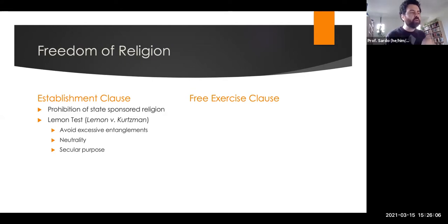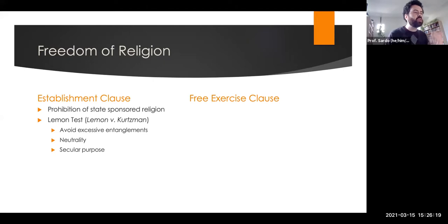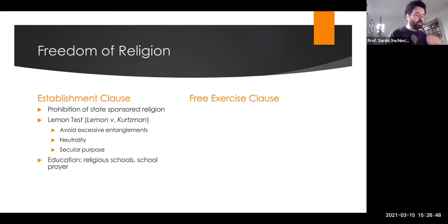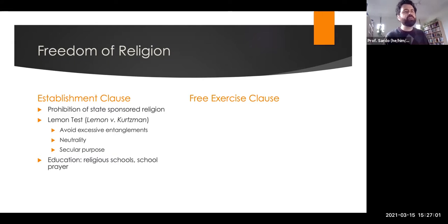The Lemon Test is a three-part test. First, a law must avoid excessive or unnecessary entanglements — the boundary between government and religion should be clear. Second, it should be neutral: it cannot inhibit or advance any particular religious practice. Third, the law must have some secular purpose — its primary justification cannot be religious, it has to be for the common good or another non-religious reason. This often comes up in questions of funding for parochial schools, school prayer, and public education more broadly.